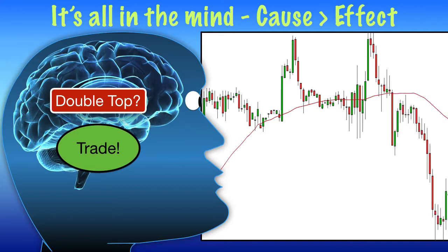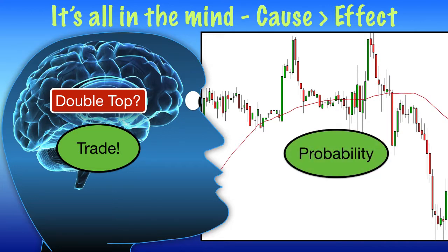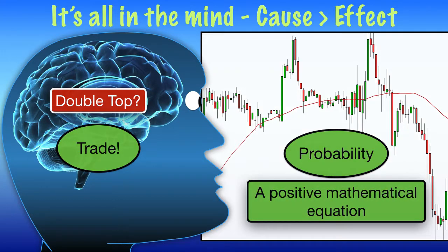This is how we work the concept of probability, and this is our edge in trading. We make a decision based on a set of criteria, we take the opportunity, and the trade either completes successfully and we make money, or we get stopped out for a loss. If our mathematical equation — our trader's equation — is positive, then over time we'll make money.